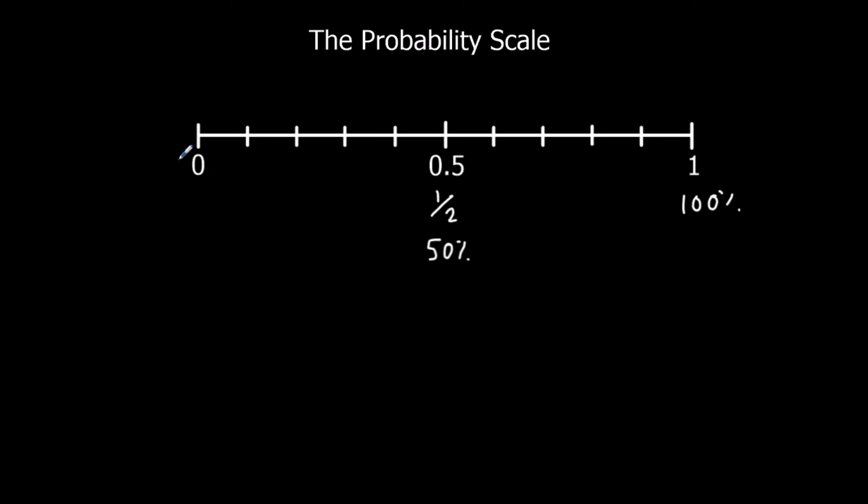If an event is at 0, it's got no chance of happening, it won't happen, it can't happen. If it's at 1 or 100%, it's certain to happen. And if it's in the middle, it's got a 50% chance, 1 in 2 chance of happening. This is what the probability scale is like, and any probabilities always have to be out of one whole.